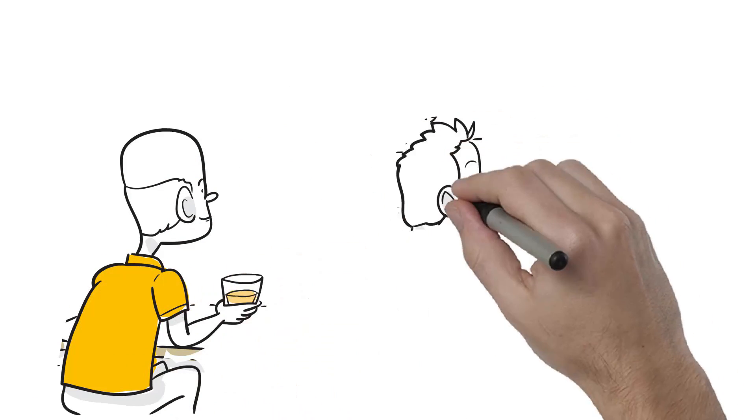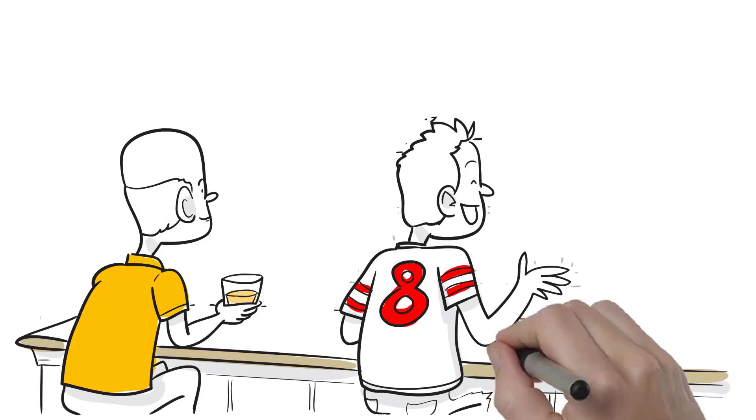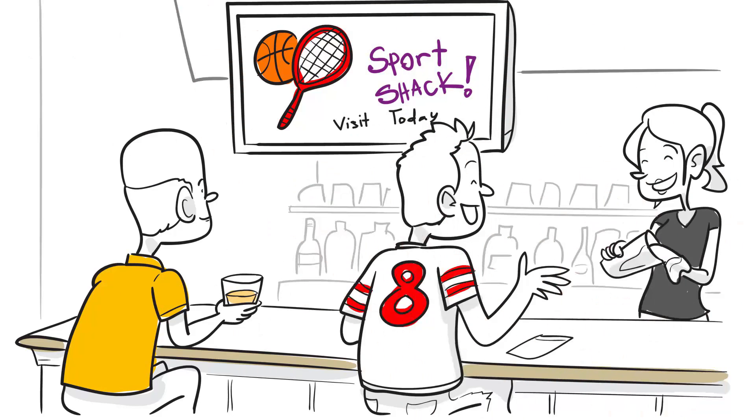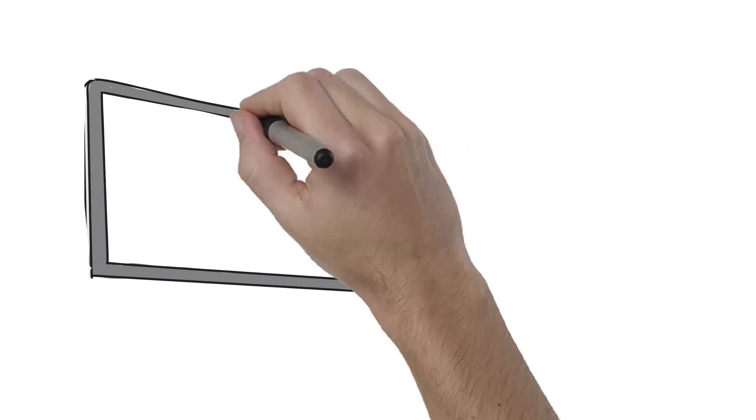You see them everywhere now, from sporting goods stores to ESPN, from car dealerships to auto parts stores. Animated video ads and explainer videos are here to stay, and for good reason—they work.